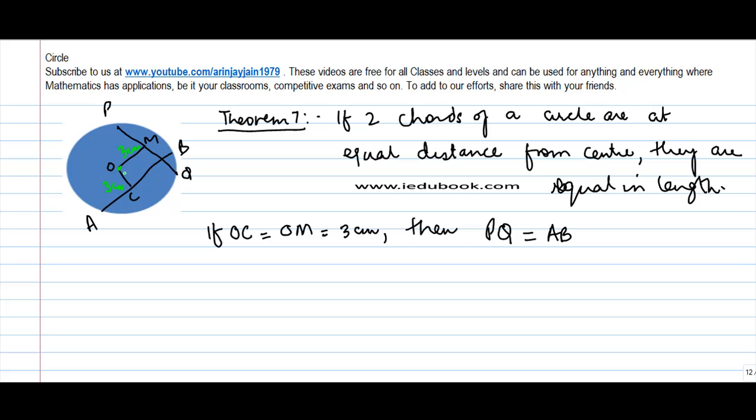The distance of O from this chord PQ is equal to the distance of O from AB, then PQ has to be equal to AB.